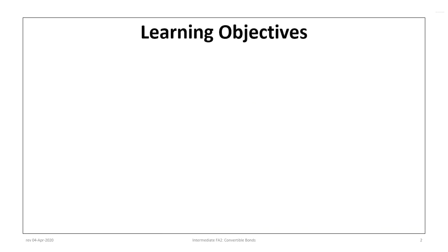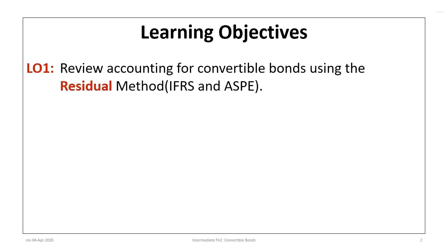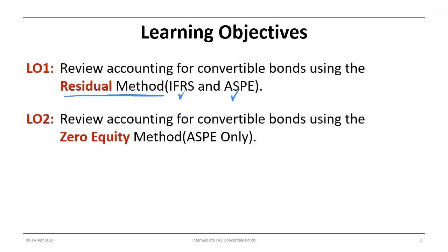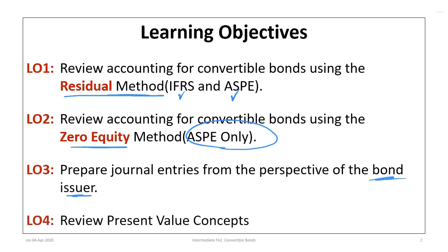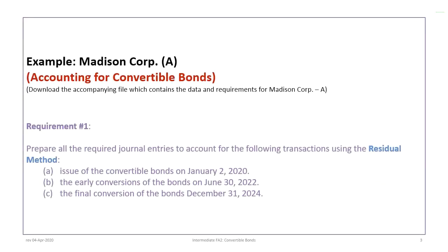This tutorial has four major learning objectives. The first is to review accounting for convertible bonds using the residual method under both IFRS and ASPE. Second, to review accounting for convertible bonds using the zero equity method, which is applicable to ASPE only. Third, to prepare journal entries from the perspective of the bond issuer, and finally to review present value concepts. This tutorial uses the Madison Corp A example, so please make sure you download the correct file and preview the information before proceeding.